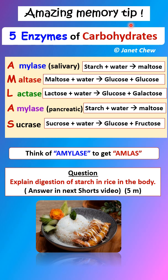Here is an amazing memory tip for the five enzymes of carbohydrates: think of the word AMLAS. A is for amylase — salivary amylase. M is for maltase. L is for lactase. A again is for pancreatic amylase. S is for sucrase. To get this word AMLAS, think of the word amylase but minus the Y and E, and you will get AMLAS.